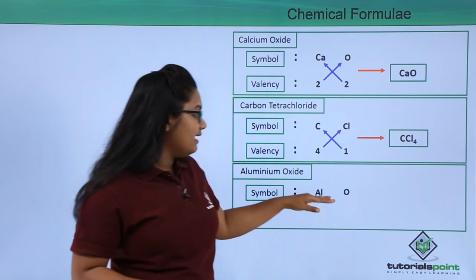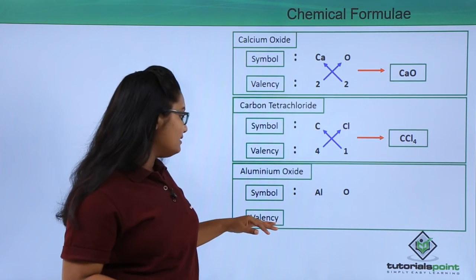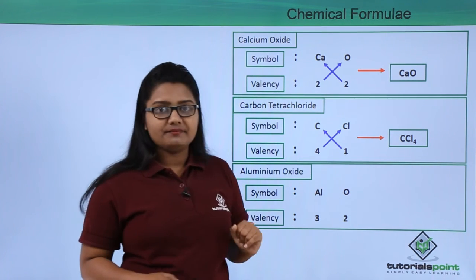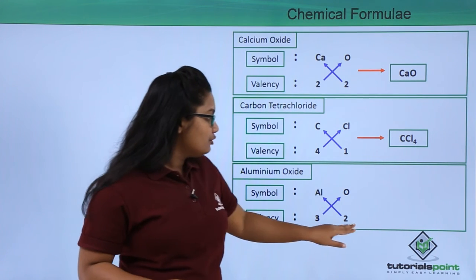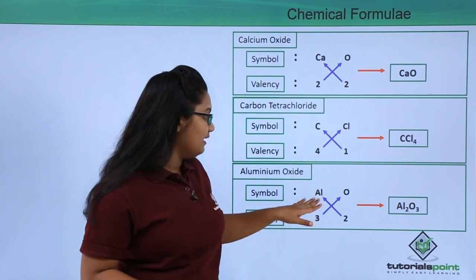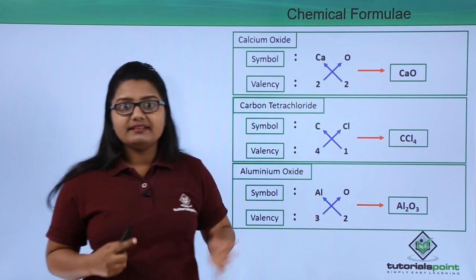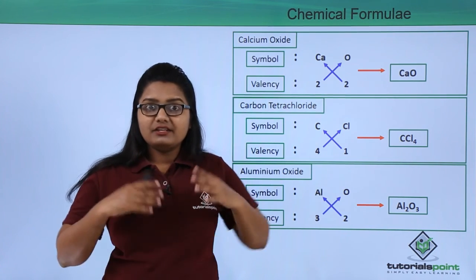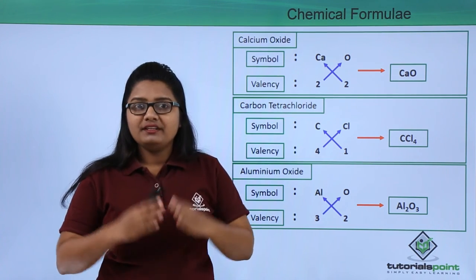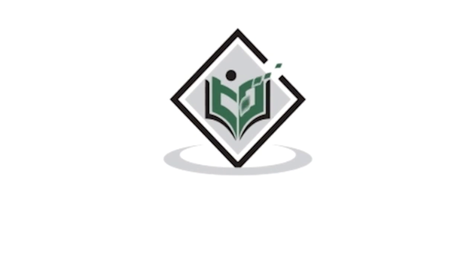For aluminium oxide, we write symbols Al and O, with aluminium having a valency of 3 and oxygen a valency of 2. Crossing over: 2 goes to aluminium and 3 goes to oxygen, giving the formula Al₂O₃. These were the examples of writing chemical formulas by following simple steps. I hope you liked this video — thank you, TutorialsPoint, simply easy learning.